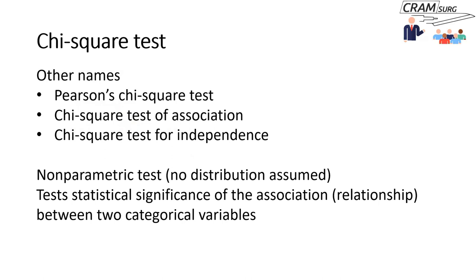In non-parametric tests, you do not make any assumption about the way the data is distributed. In contrast, parametric tests rely on the fact that the data is normally distributed. For non-parametric tests, you don't make any assumptions about the data distribution. The chi-square test essentially looks for statistical significance of the association between two categorical variables — that is, data grouped into categories, which are qualitative data types.